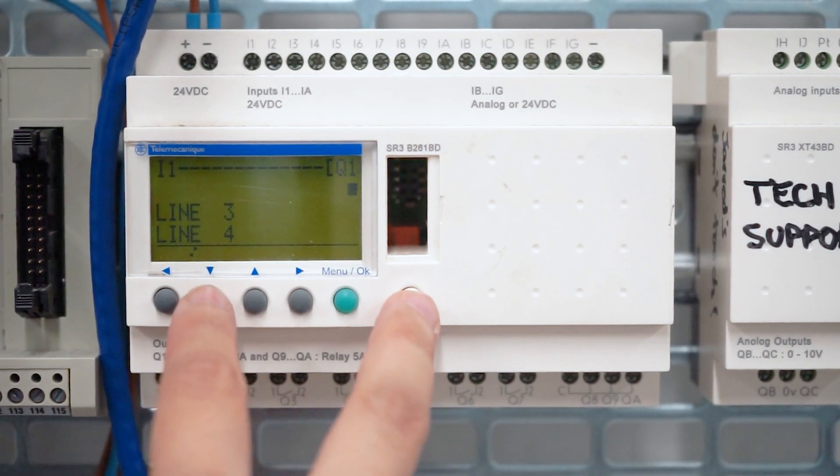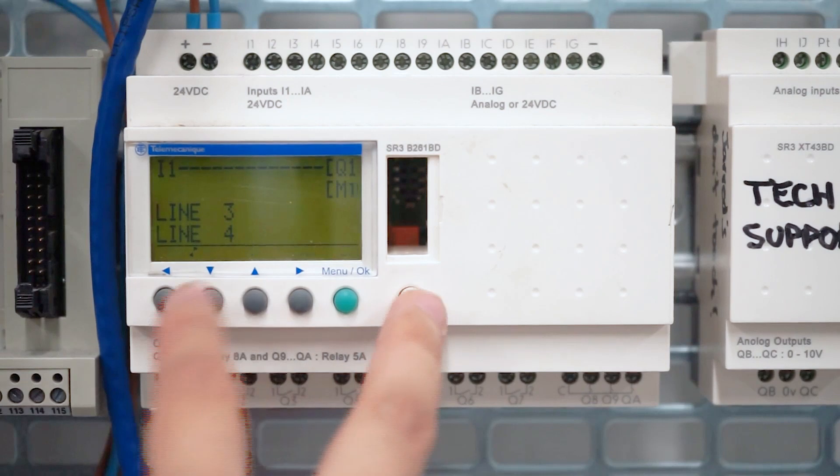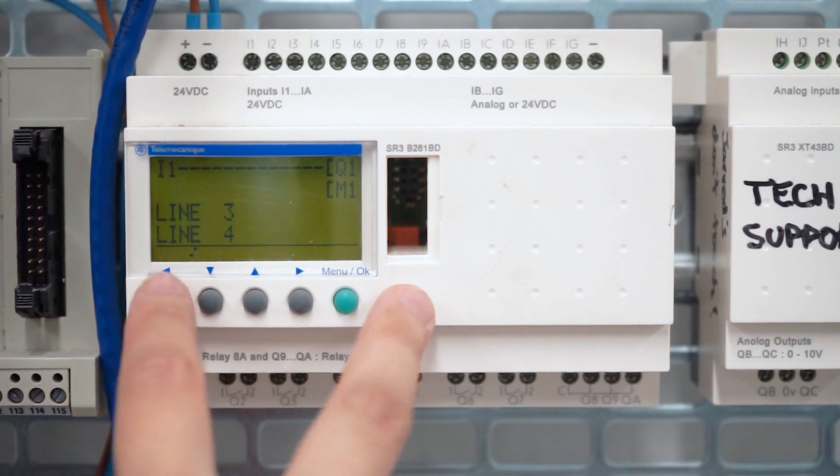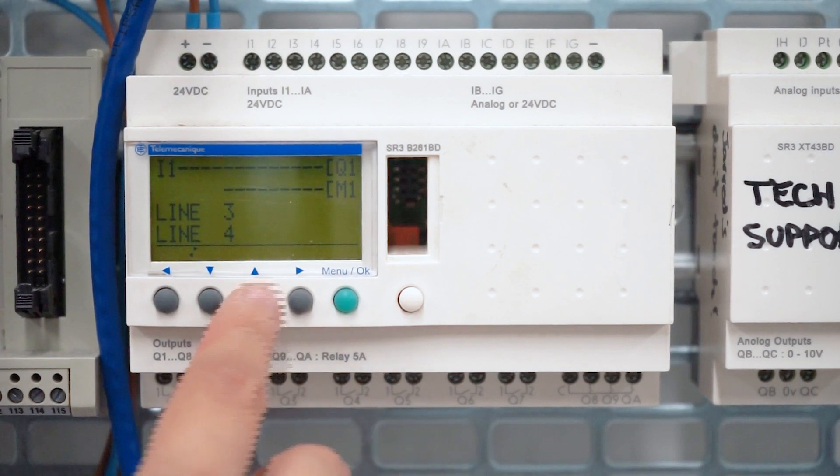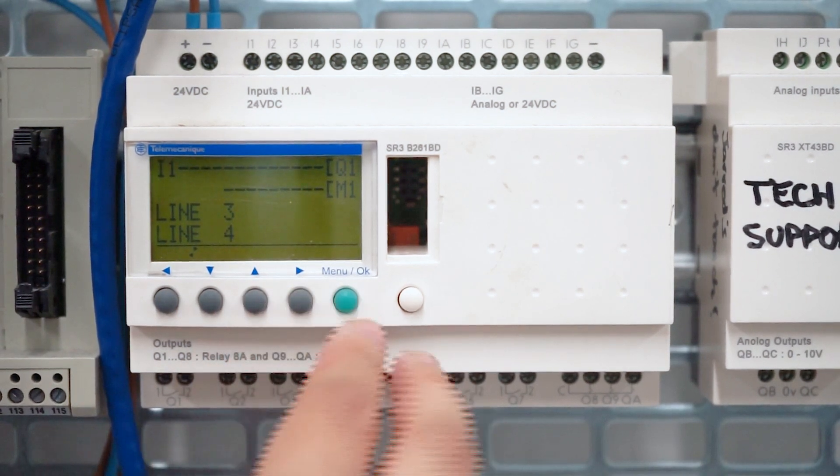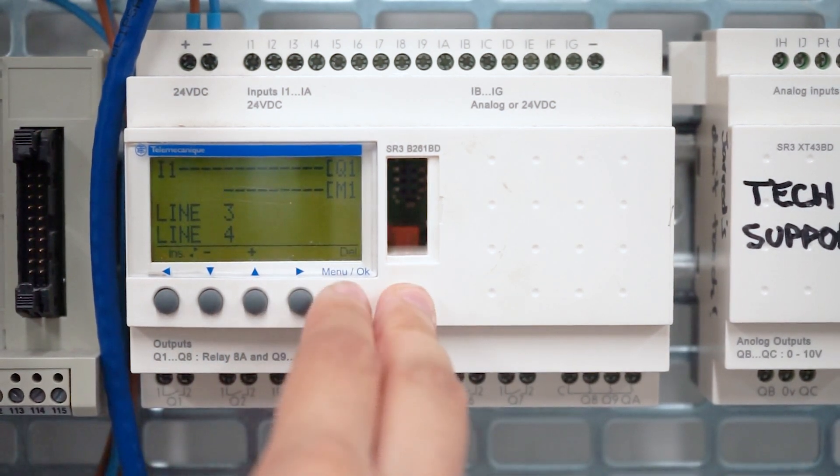Now let's say that you want to delete something. Let's say, for example, we accidentally add another coil and a line. So what we do is we're going to mouse over the thing we want to delete, I'm going to press the shift button, menu ok, and it deletes it.